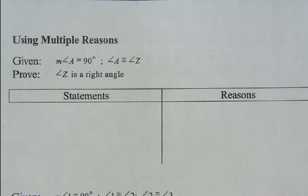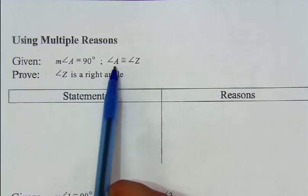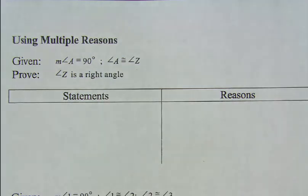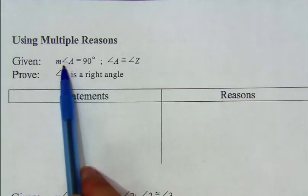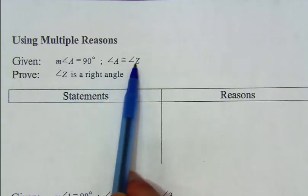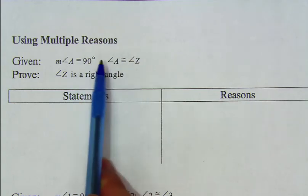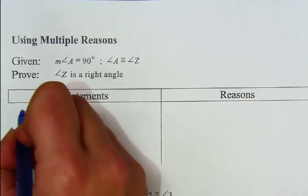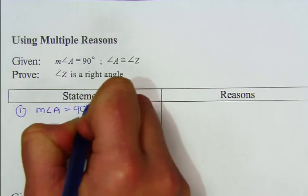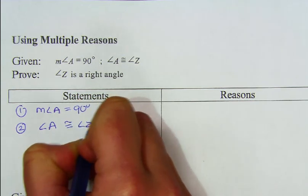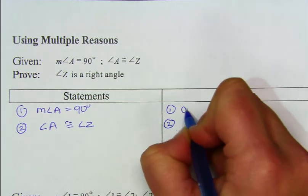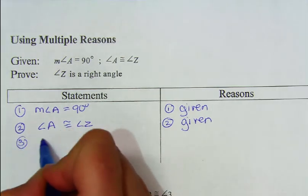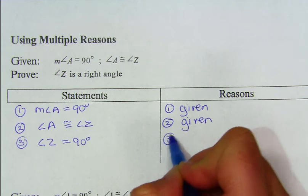On the back of that paper, let's do one more proof together. This proof states that the measure of angle A is 90 degrees, and angle A is congruent to angle Z. Those are the given statements — our clues — and what we want to prove is that angle Z is a right angle. Starting with the givens: the measure of angle A is 90 degrees, and angle A is congruent to angle Z — both given. Then, using the transitive property, angle Z is going to equal 90 degrees.